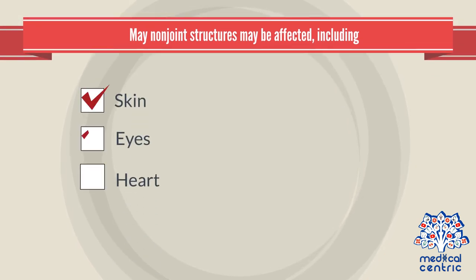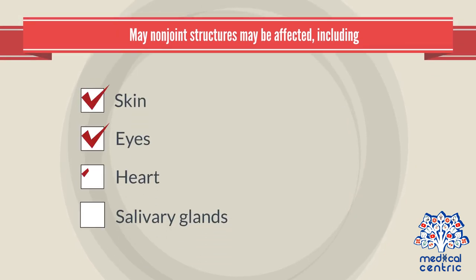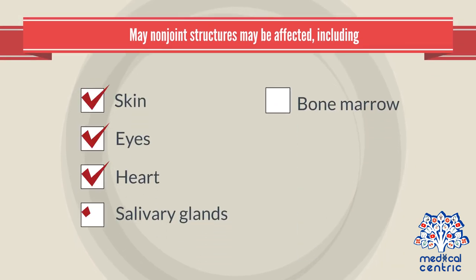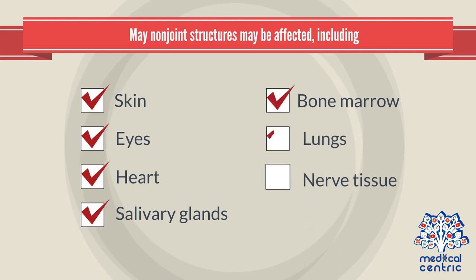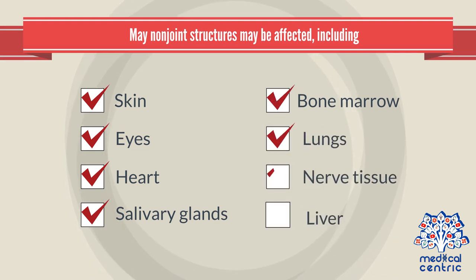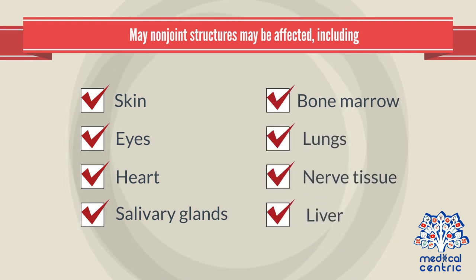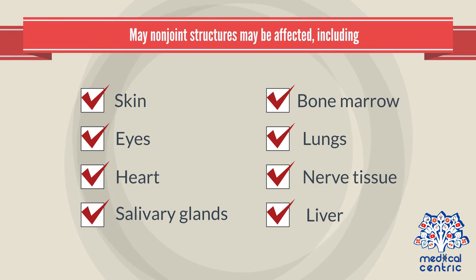Non-joint structures that may be affected include skin, eyes, heart, salivary glands, bone marrow, lungs, nerve tissue, and liver.